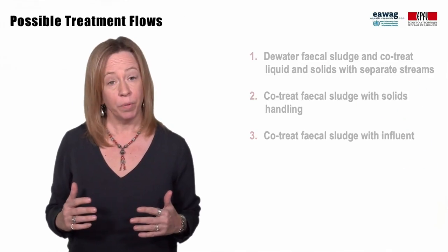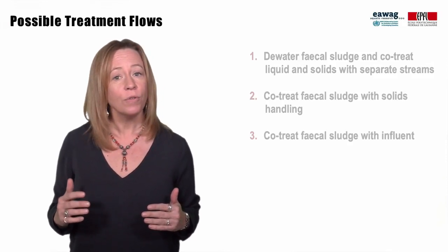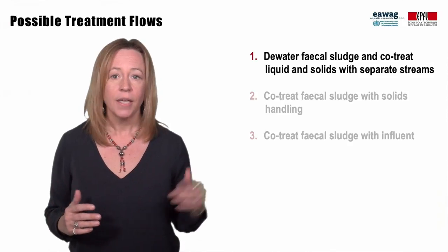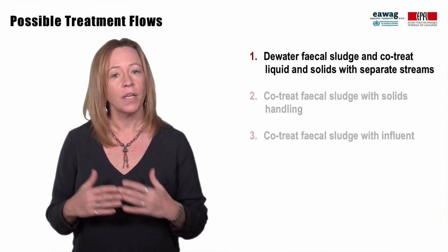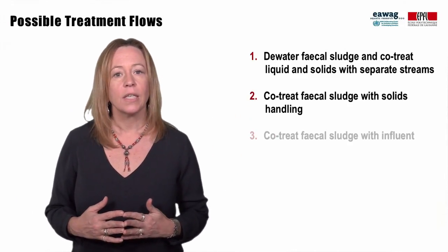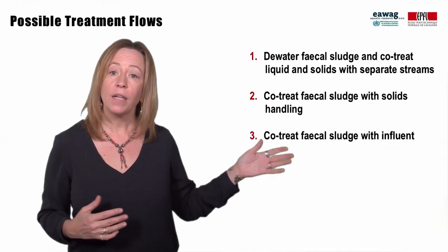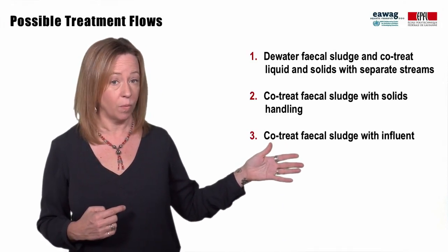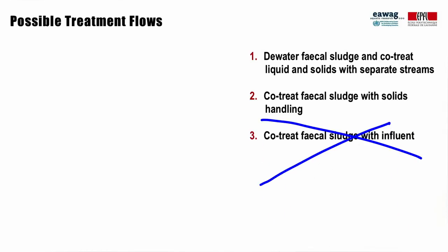If you have a wastewater treatment plant that is currently under capacity, there are three ways you could investigate co-treatment with fecal sludge. One: dewater the fecal sludge and send the resulting solid and liquid streams for treatment with the solid and liquid wastewater streams. Two: treat the fecal sludge together with the biosolids, starting from the dewatering stage. And three: directly treat the fecal sludge with the influent wastewater. In general, three is not recommended, and it needs to be stressed that fecal sludge should never be added directly into secondary wastewater treatment.